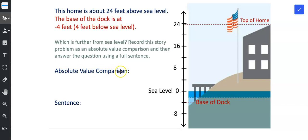And now we need to do our absolute value comparison and write our sentence. Because it's asking us which is further from sea level. So we're supposed to record this problem as an absolute value comparison and then answer the question using a full sentence. So let's go ahead and start with our absolute value comparison.